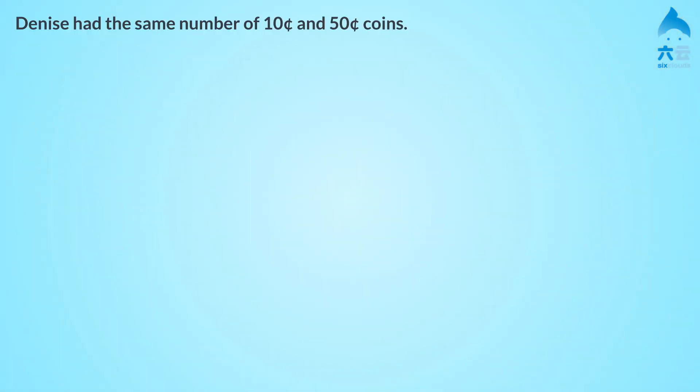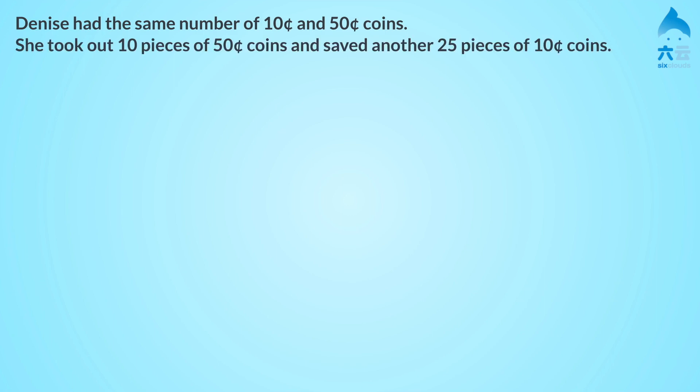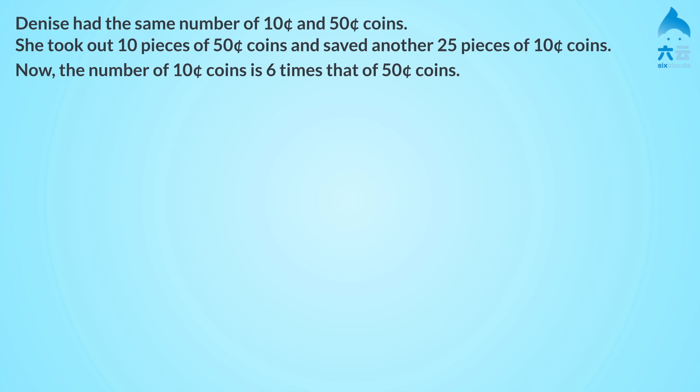Denise has the same number of $0.10 and $0.50 coins. She took out 10 pieces of $0.50 coins and saved another 25 pieces of $0.10 coins. Now the number of $0.10 coins is 6 times that of $0.50 coins. How much did she have at first?